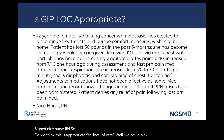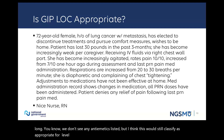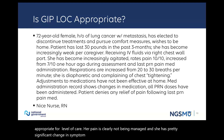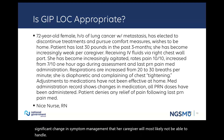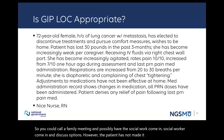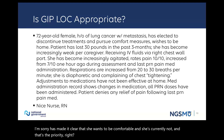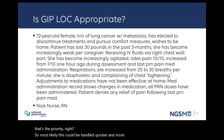We could pick this note apart all day long. We don't see any anti-emetics listed, but I think this would still classify as appropriate for GIP level of care. Her pain is clearly not being managed and she has a pretty significant change in symptom management that her caregiver will most likely not be able to handle. You could call a family meeting and possibly have the social worker come in and discuss options. However, the patient has made it clear that she wants to be comfortable and she's currently not — and that's the priority. Most likely this could be handled quicker and more efficiently in an inpatient setting where there are more resources available.